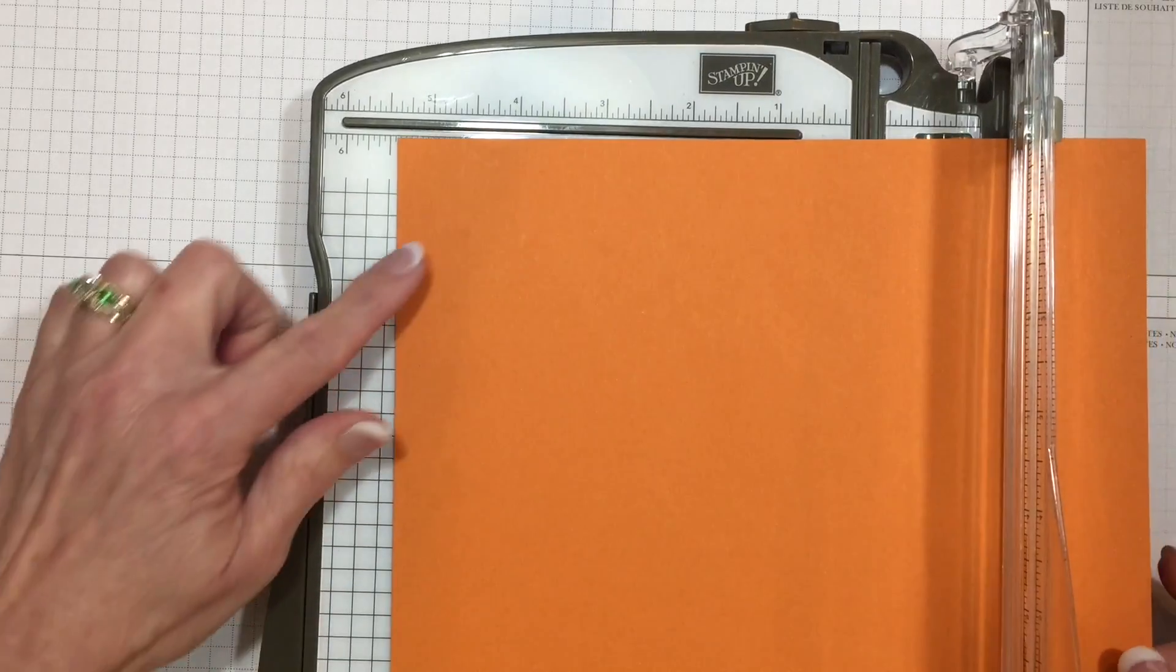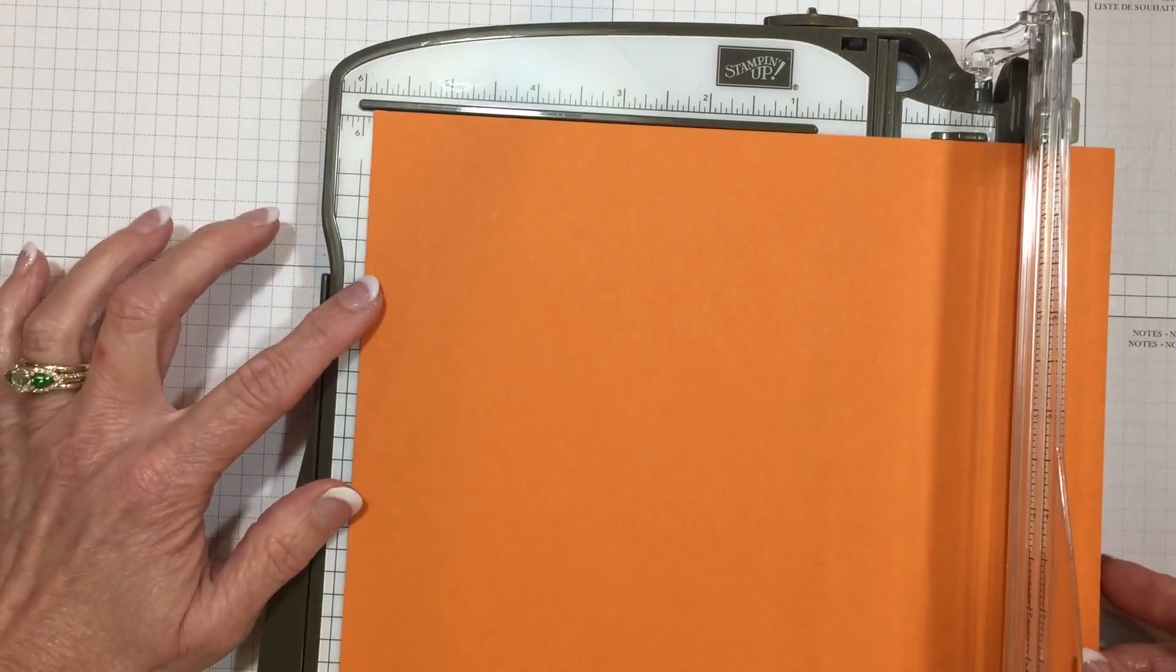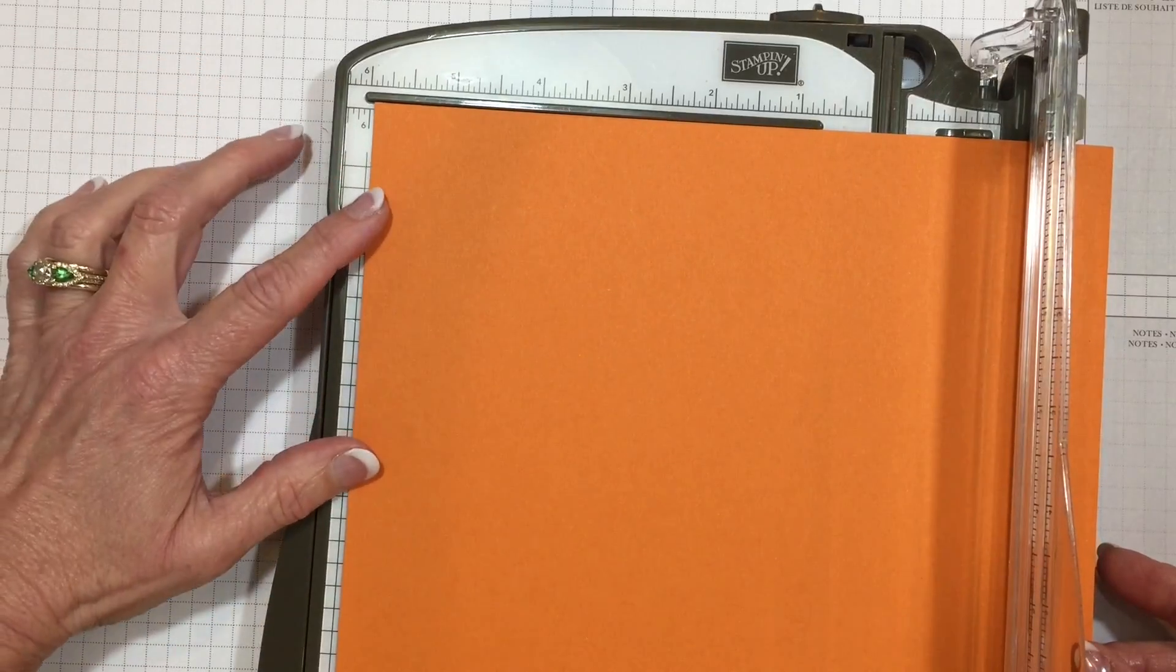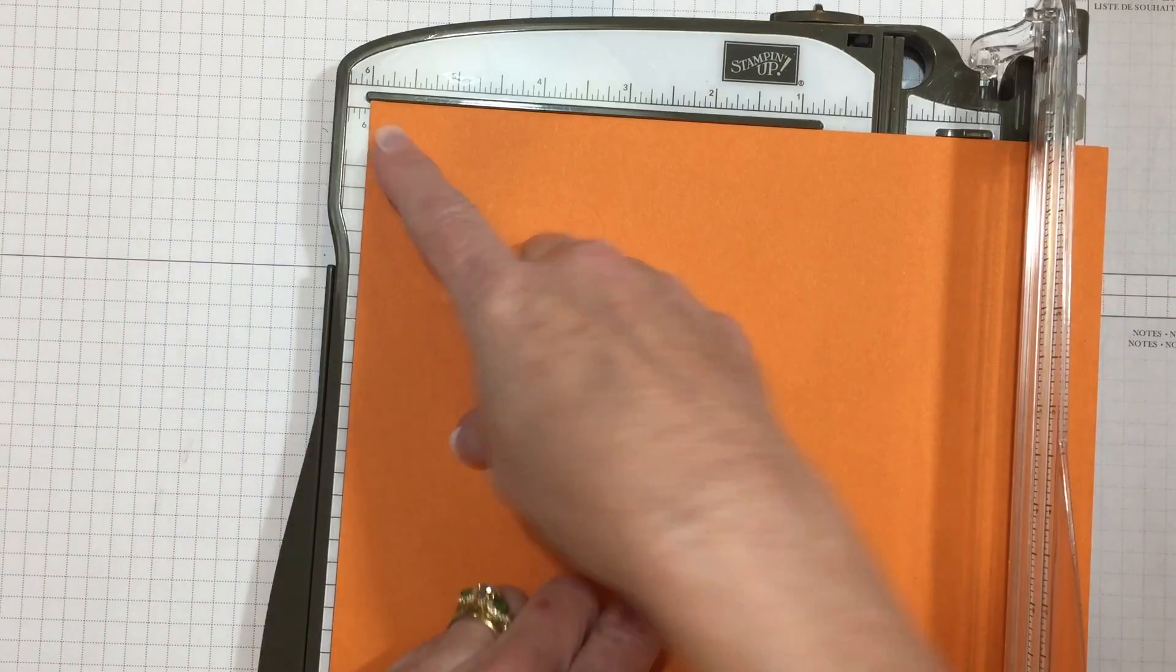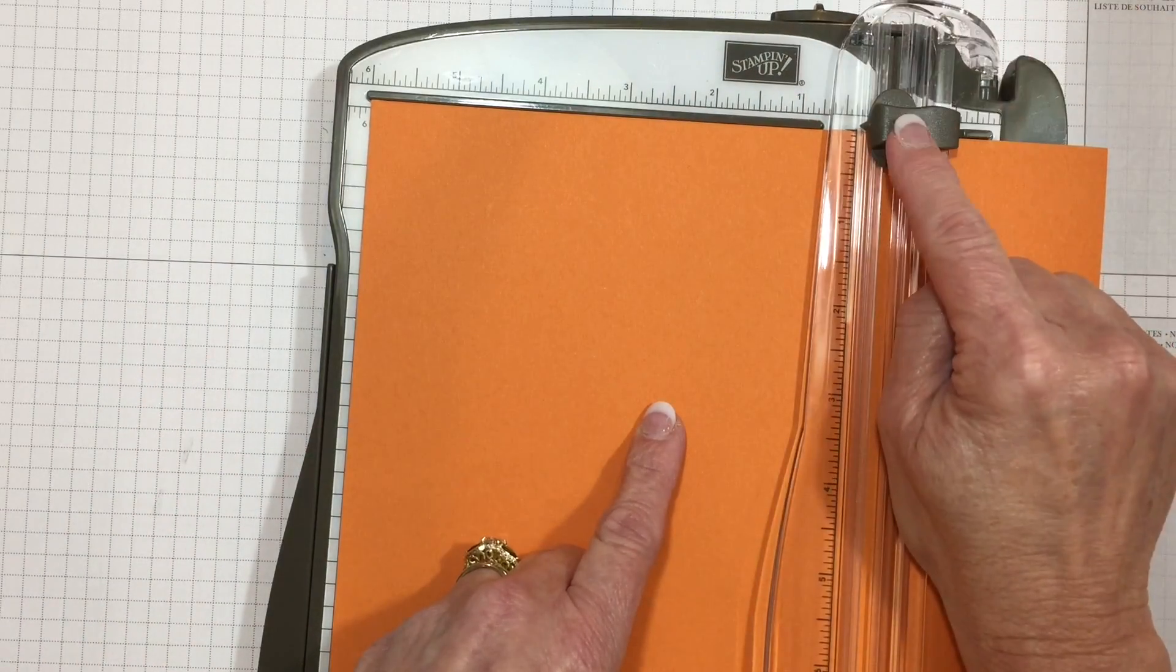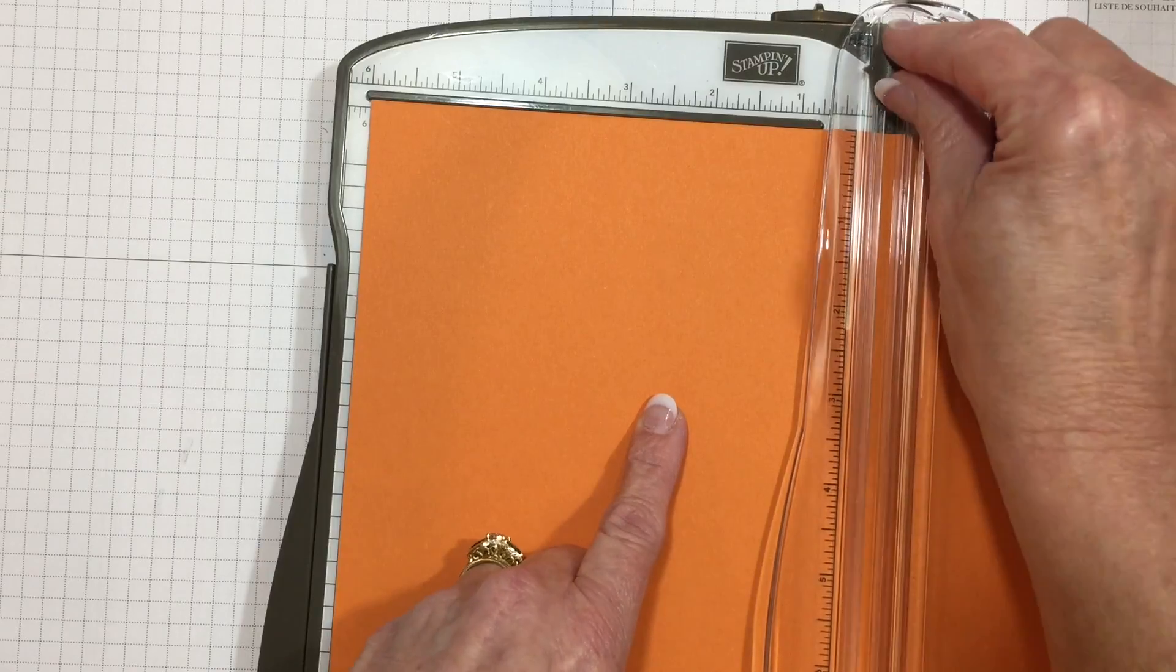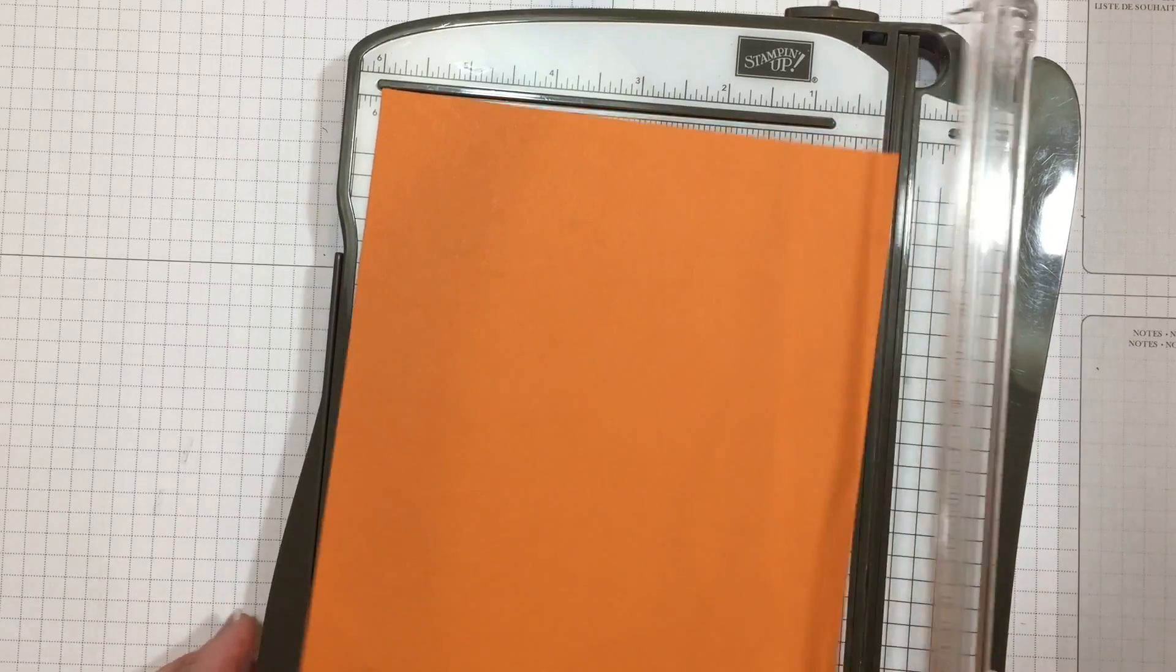On the 8.5 inch side, you're going to line it up on the six. We're going to be cutting this at six inches. I have my cutting blade at the top—it's the darker blade. We're going to trim that and put this aside.